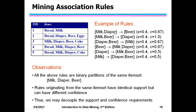Now I think everyone understands how to calculate support and confidence. You can frame any type of rule and check its support and confidence using these formulas. These are just examples of different types of rules. Is it clear to all of you how to calculate support and confidence?